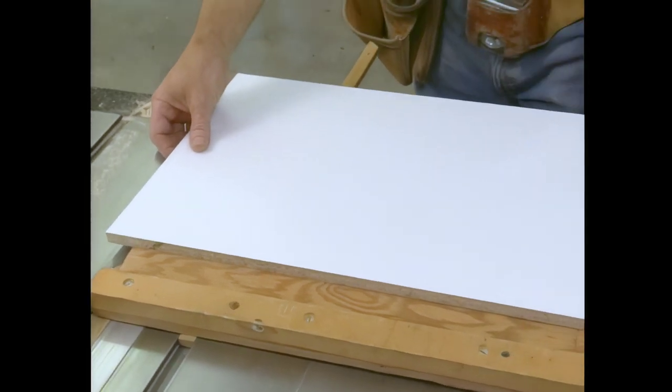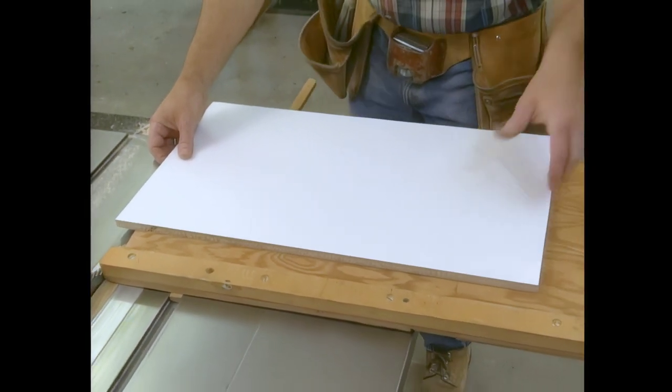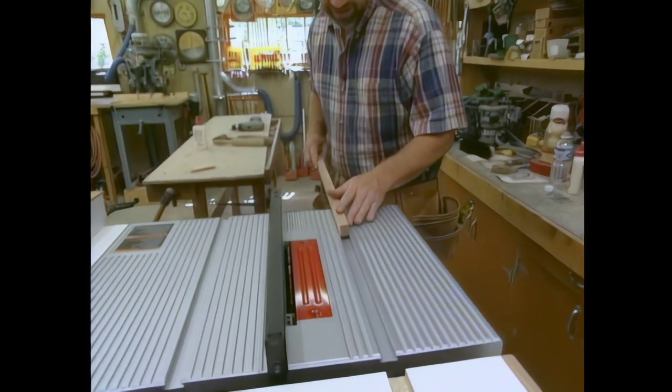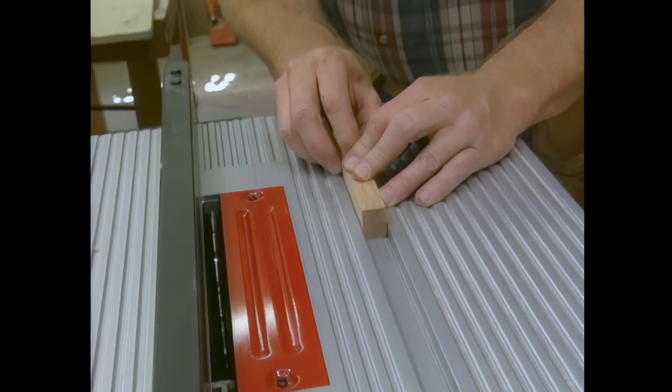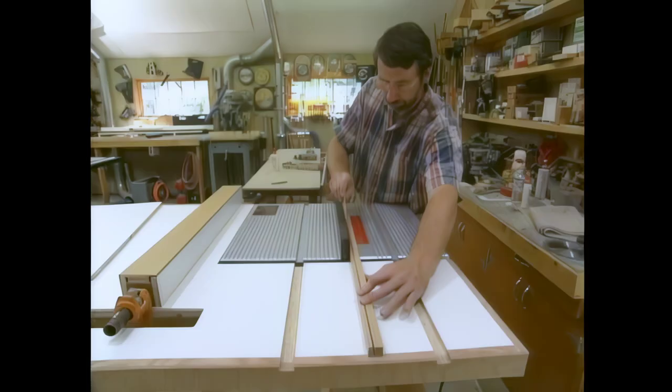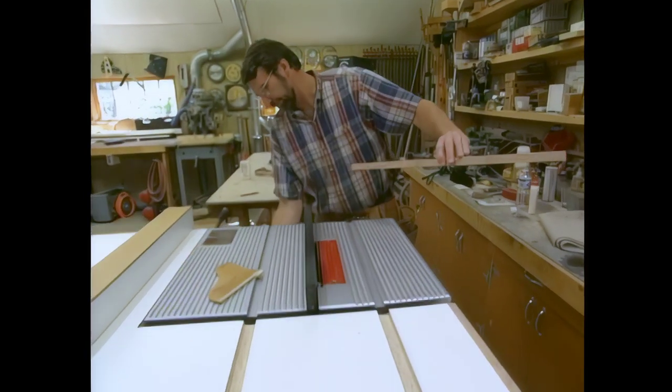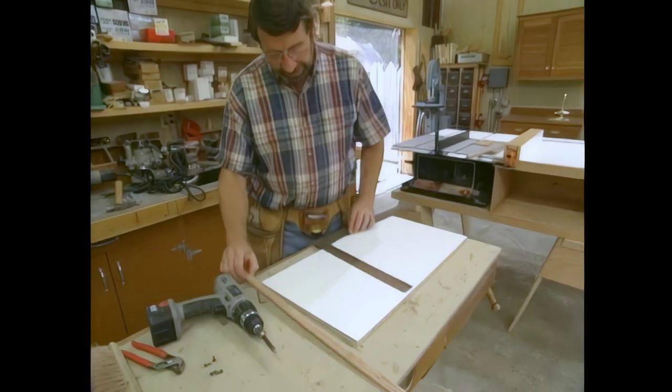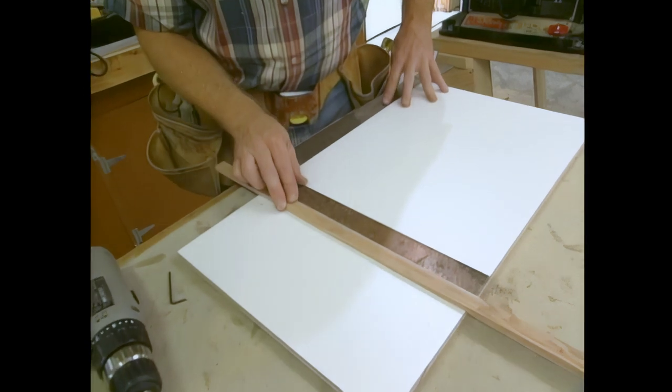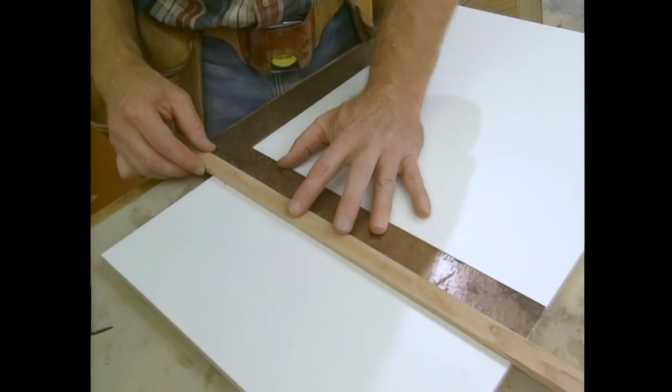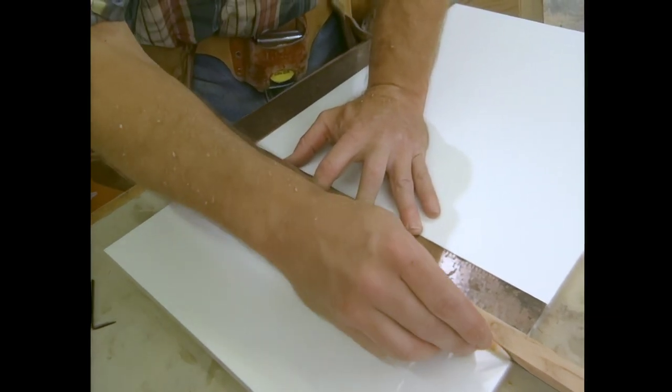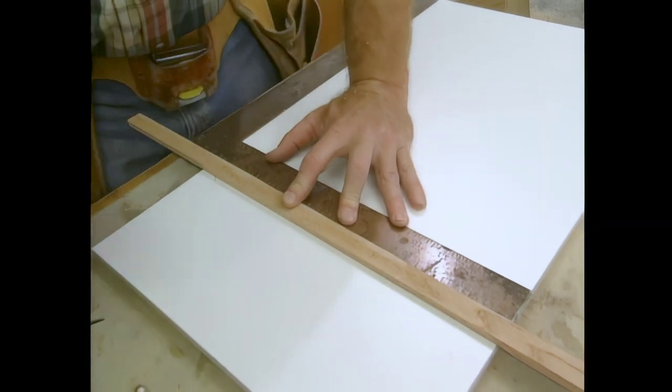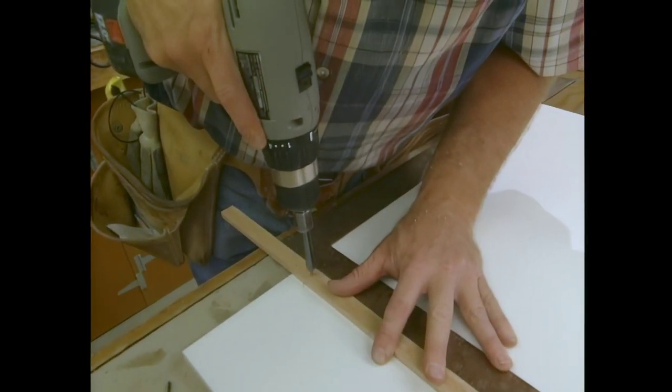This piece of melamine is going to be for a base we're going to build for the small saw. Here I have a piece of oak stock which is just the right width to slide in the miter gauge slot easily but has very little side to side play. Now I want to cut it so it's flush to the table saw surface. Now what I want to do is locate the runner and I'm going to use a big framing square to make sure that it's absolutely square to the edge of our base piece.